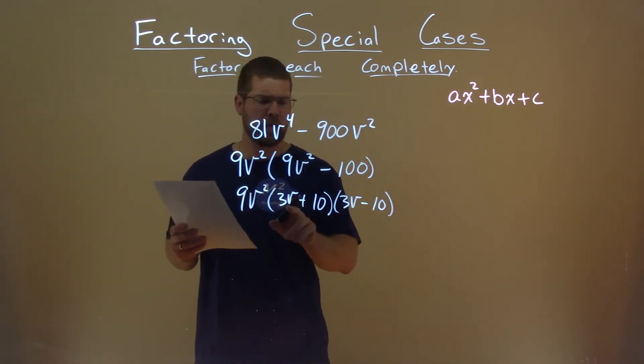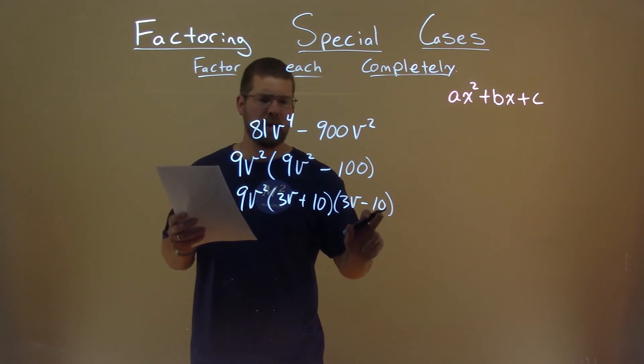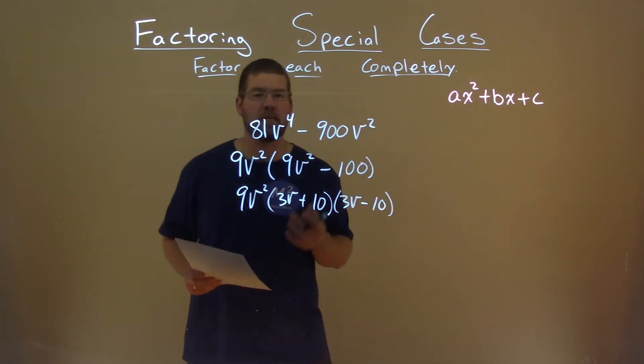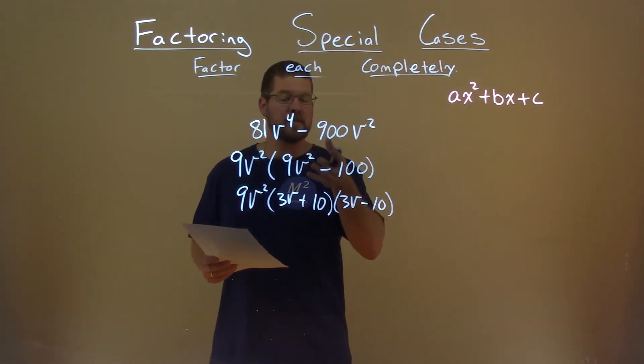But what happens when we multiply 3v times negative 10 and 10 plus 3v? When we do that, add it together, they actually cancel each other out, and that's the beauty of how this is set up here. So our b value, which is 0, will occur.